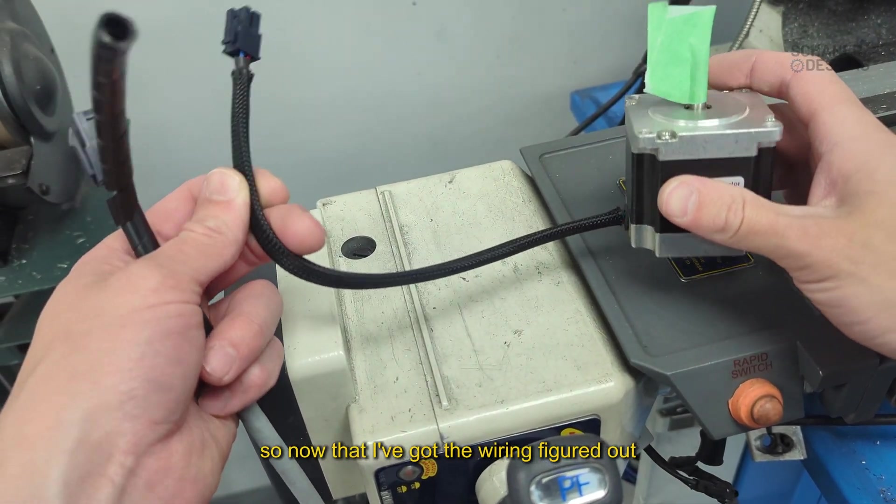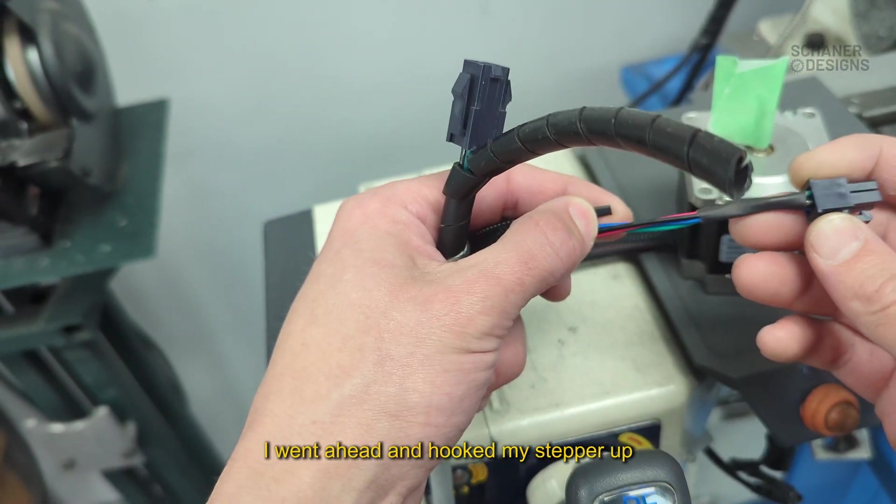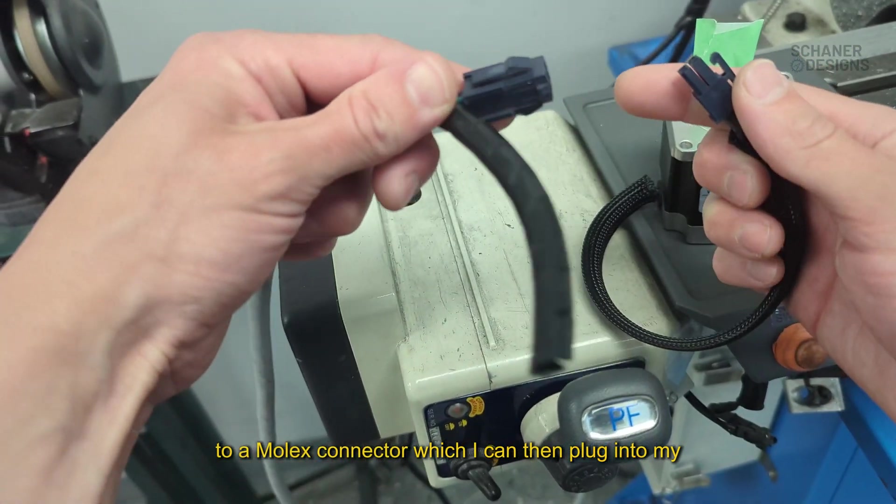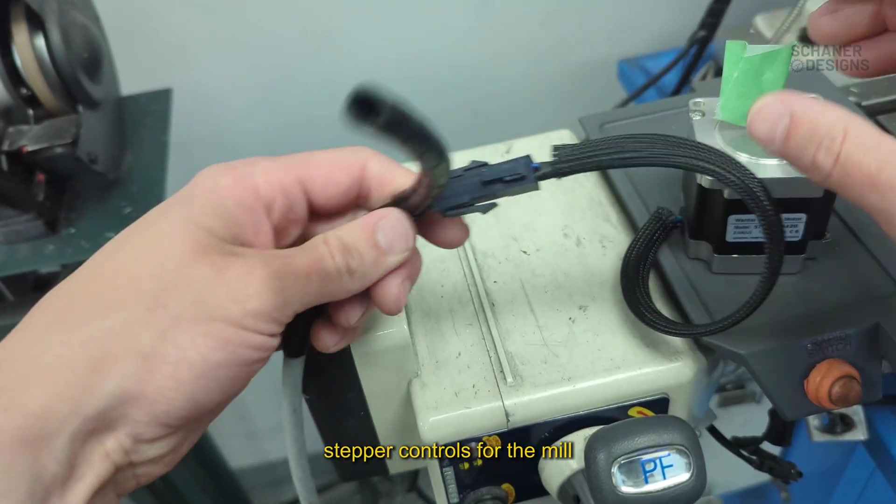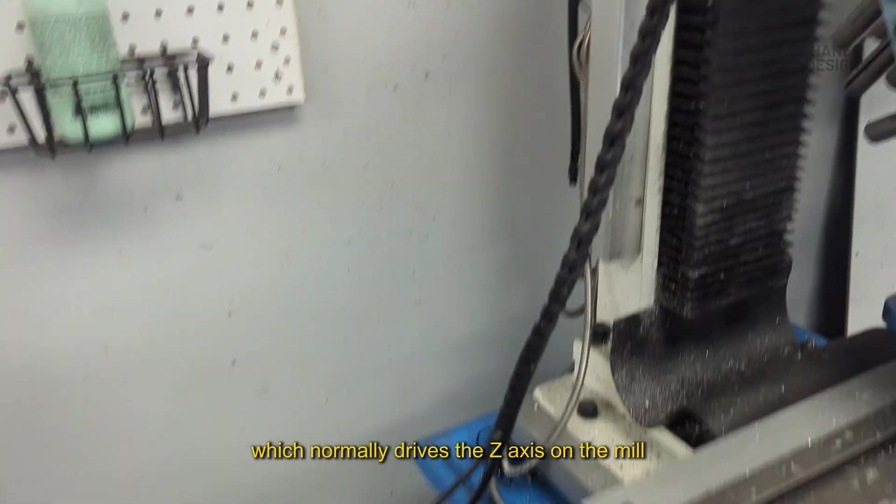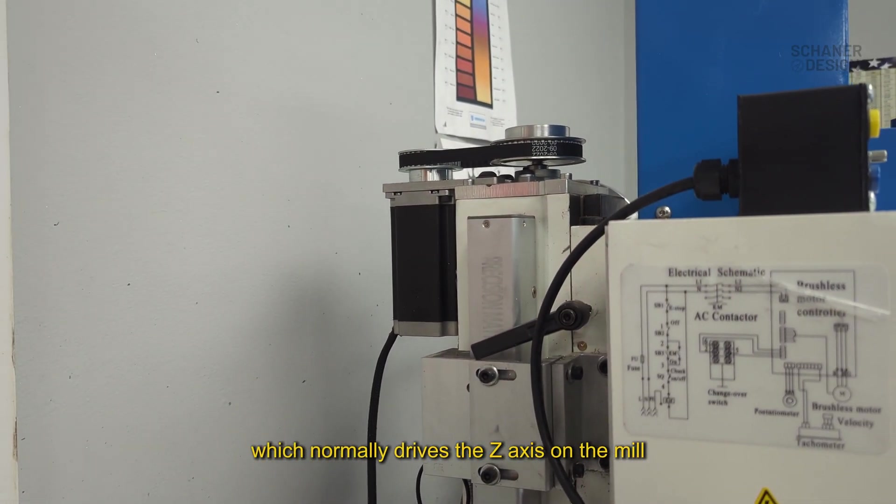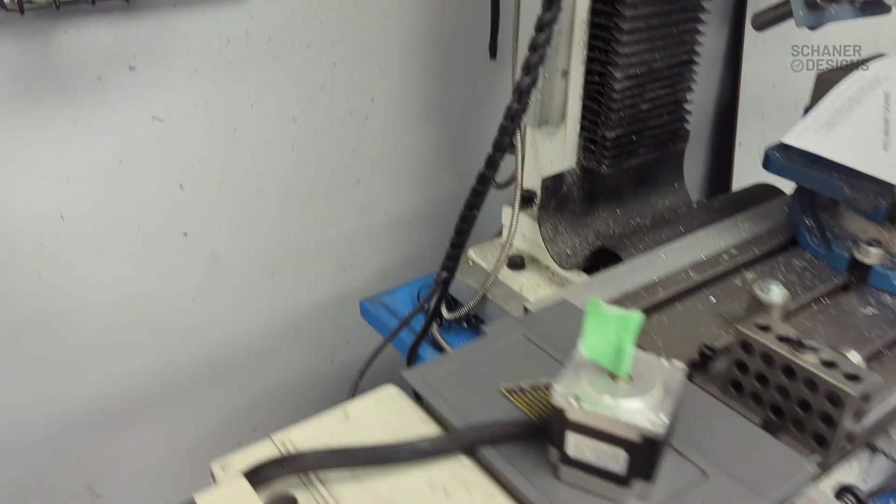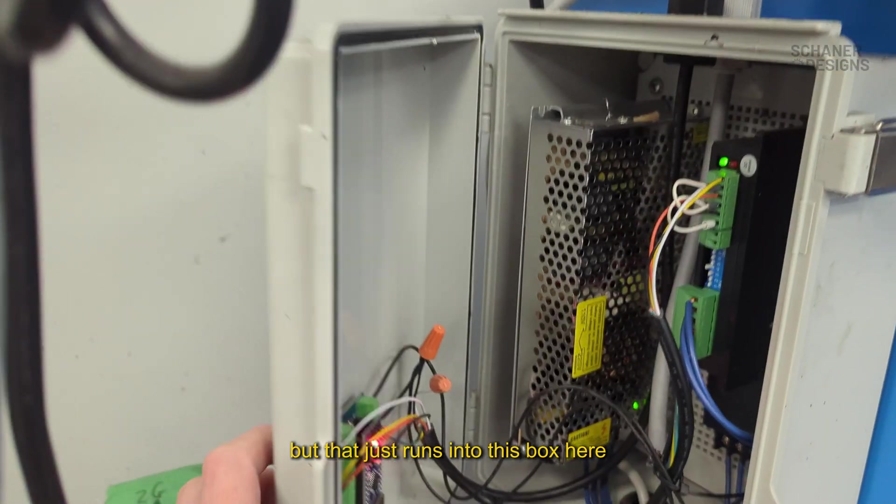Now that I've got the wiring figured out, I went ahead and hooked my stepper up to a Molex connector, which I can then plug into my stepper controls for the mill, which normally drives the z-axis on the mill. You can see the stepper motor right there. That's normally hooked up to this cable.